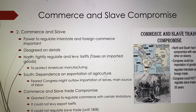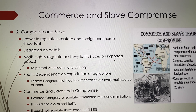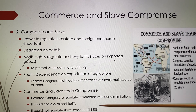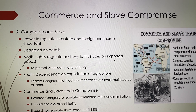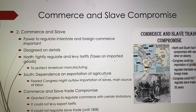So they compromised. The Commerce and Slave Trade Compromise granted Congress the power to regulate commerce with certain limitations — it could not levy export tariffs, and it could not regulate the slave trade until at least 1808. The northern states who did not want slavery agreed to wait, but not too long. Congress could not regulate slave trade for another 20 years.